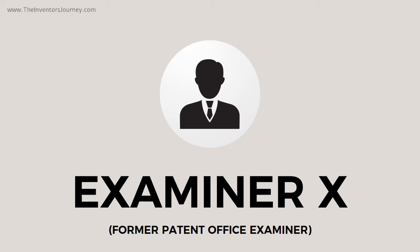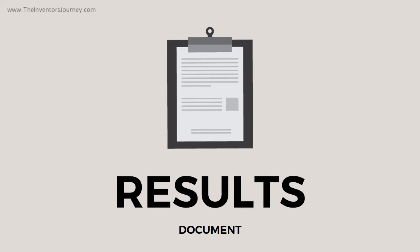When Examiner X has done his search, he sends me the results, plus any prior art like other people's patent applications that he found. I then go through the results and see whether I agree with Examiner X. If there's any issue or slight disagreement, I contact Examiner X and we discuss it. Then I convert the results into the incredible Perfect Patent Search results document, which includes images and links to all the prior art found and also a patentability assessment explaining where the results leave you. But this isn't one of those 100-plus-page patent search results documents from poor quality providers who want to make it seem impressive by sending you a huge document which can confuse you badly.